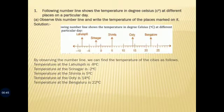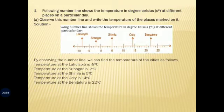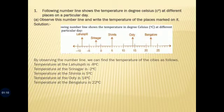In this number line we can see that between 0 and 25 there are many positive numbers, and between 0 and minus 10 there is only one negative integer. That means there are two negative temperatures and five positive temperatures. Temperature at Lahulspiti is minus 8 degree Celsius.